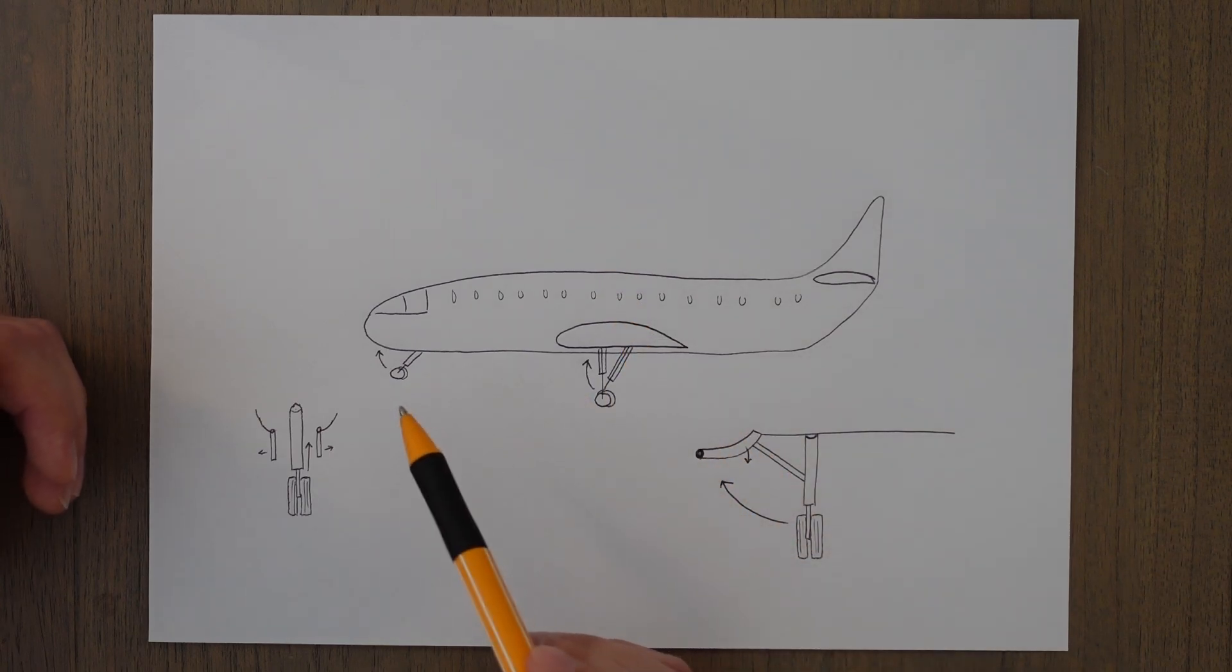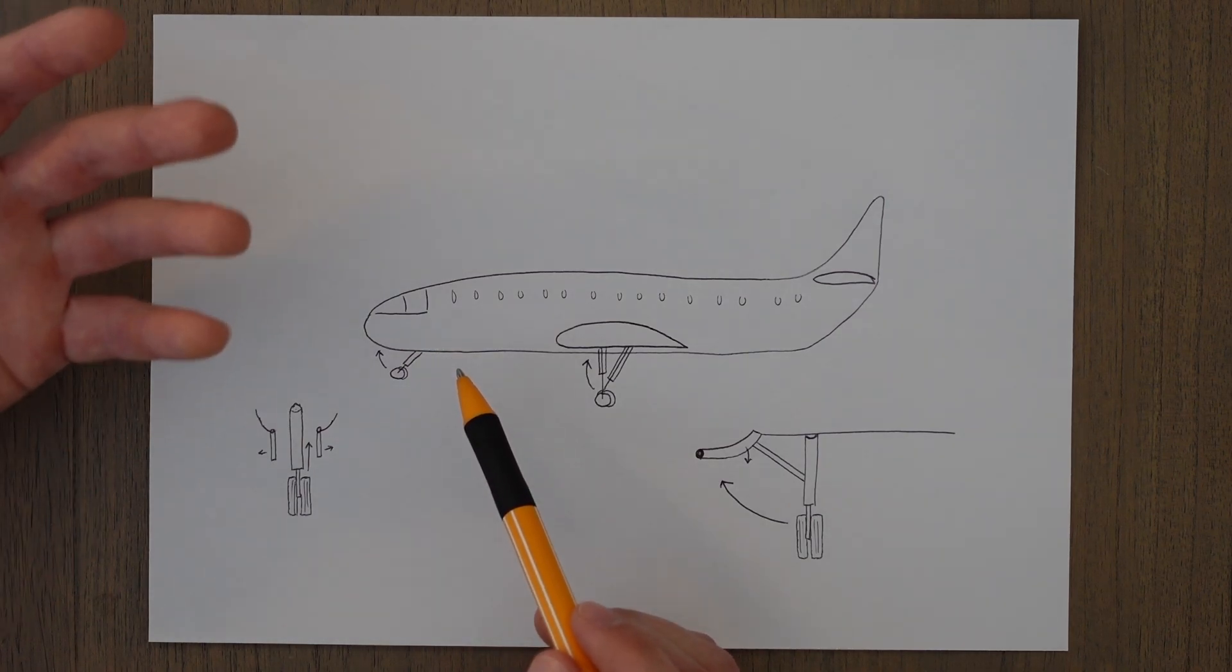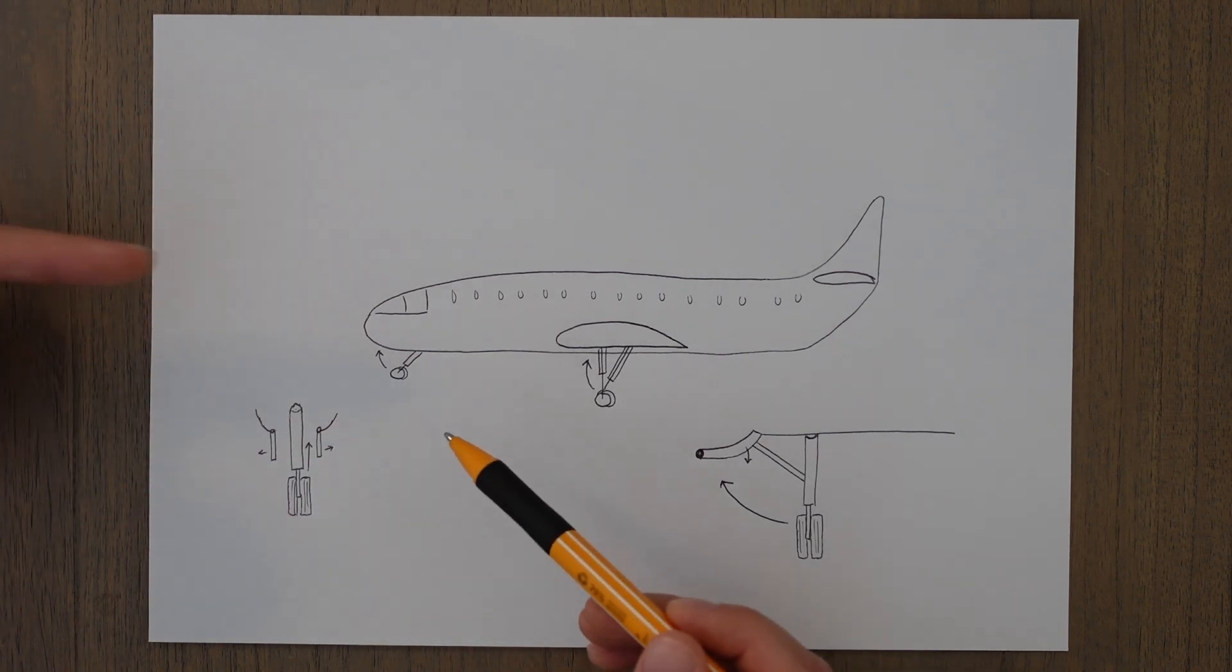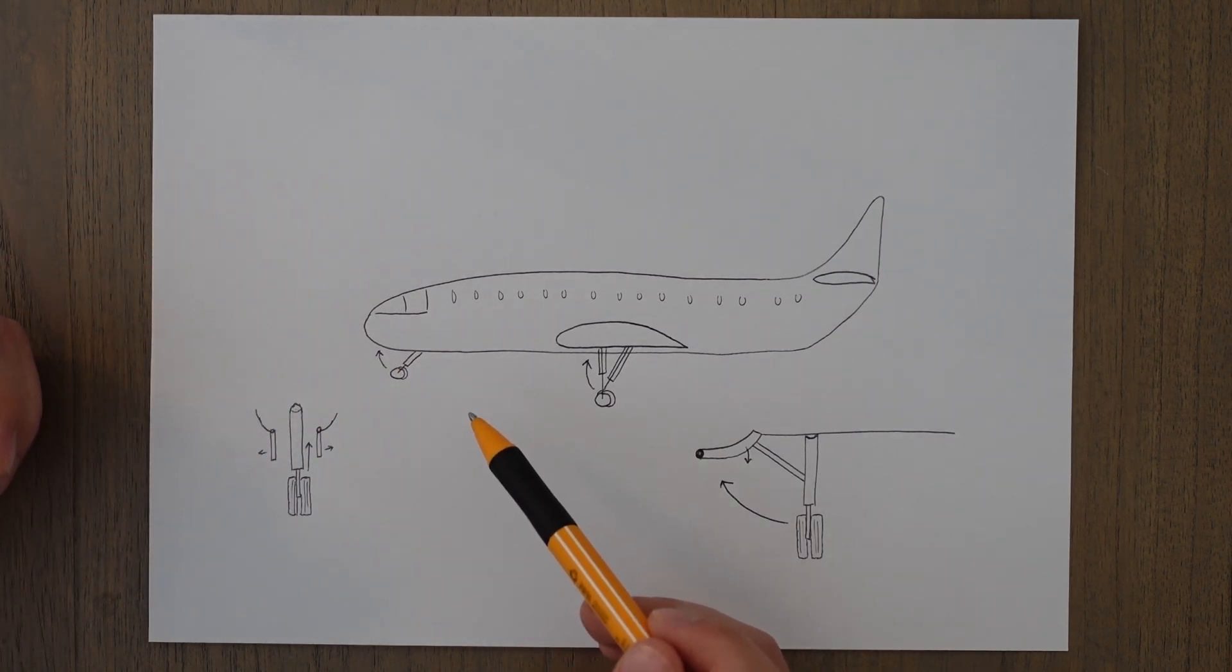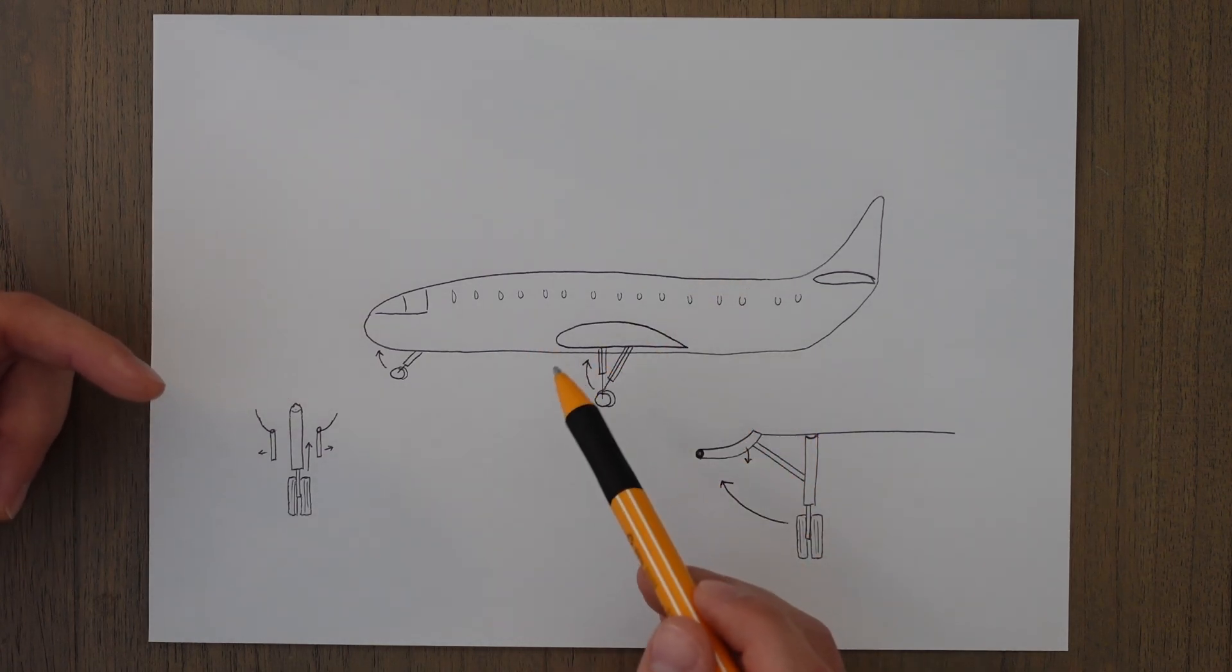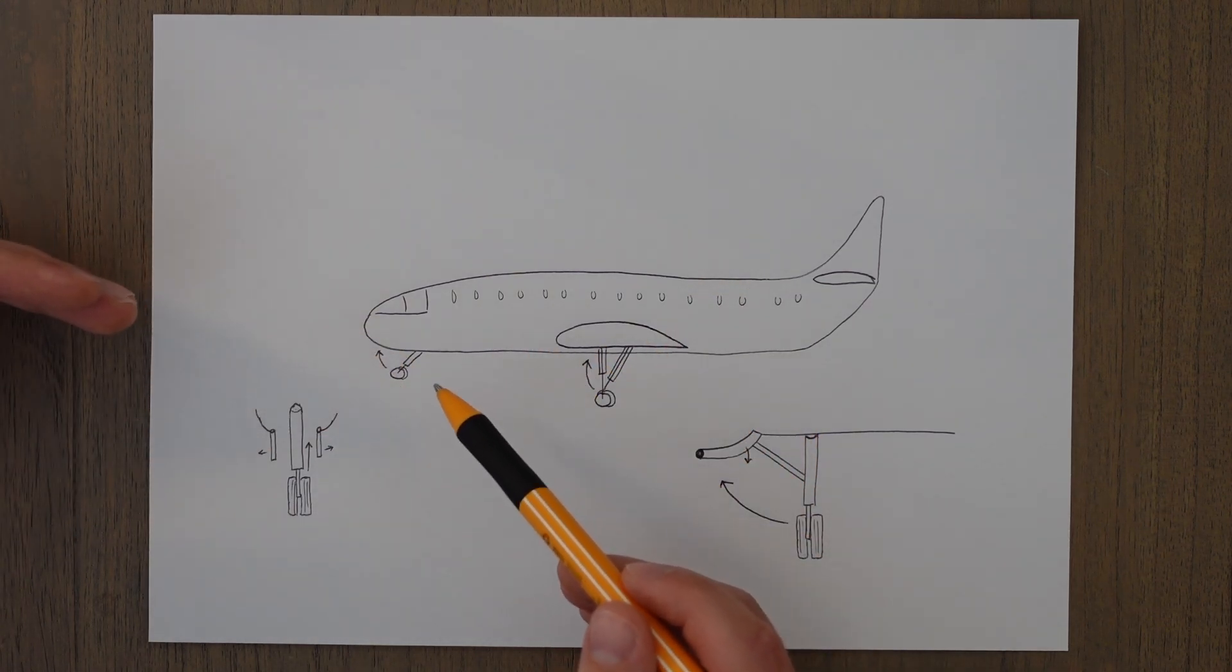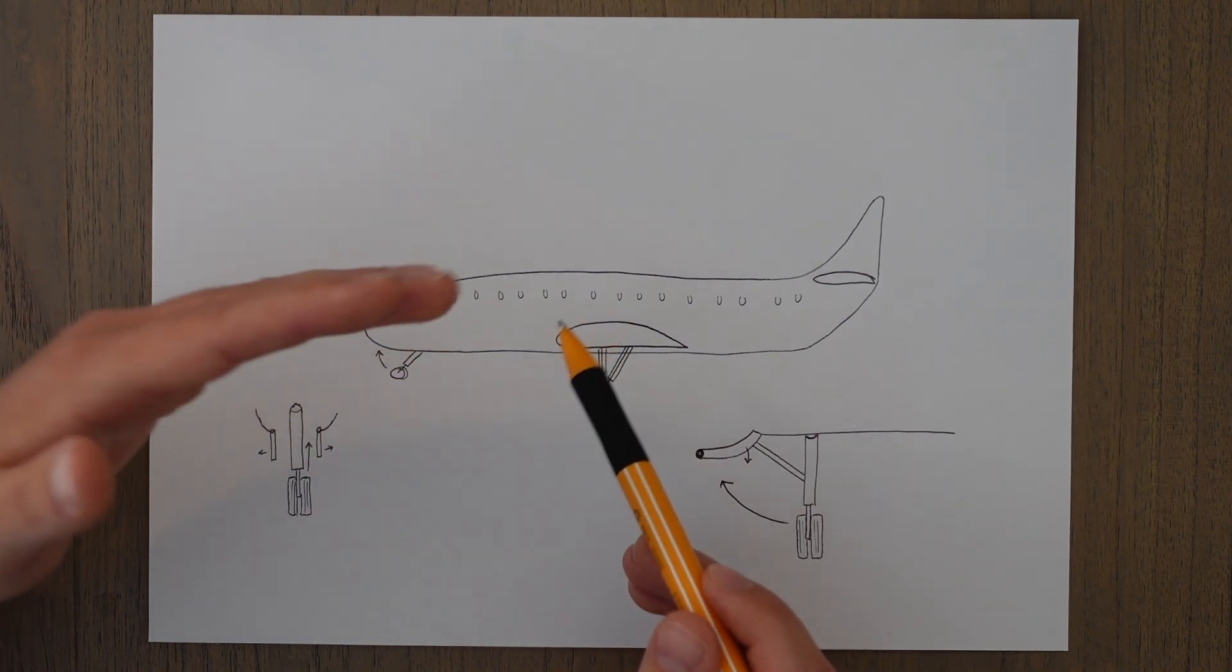You will often also see that the nose wheel of a commercial aircraft retracts forwards, and that is because if the hydraulics fail and we need to do the gravity extension, then the forward speed of the aircraft and the air hitting the aircraft will help push the nose wheel down into that locked position. If it retracted and extended the other way, backwards into the body, then the forward motion of the aircraft would cause difficulty in locking the wheel down. The air would basically push the wheel back up.